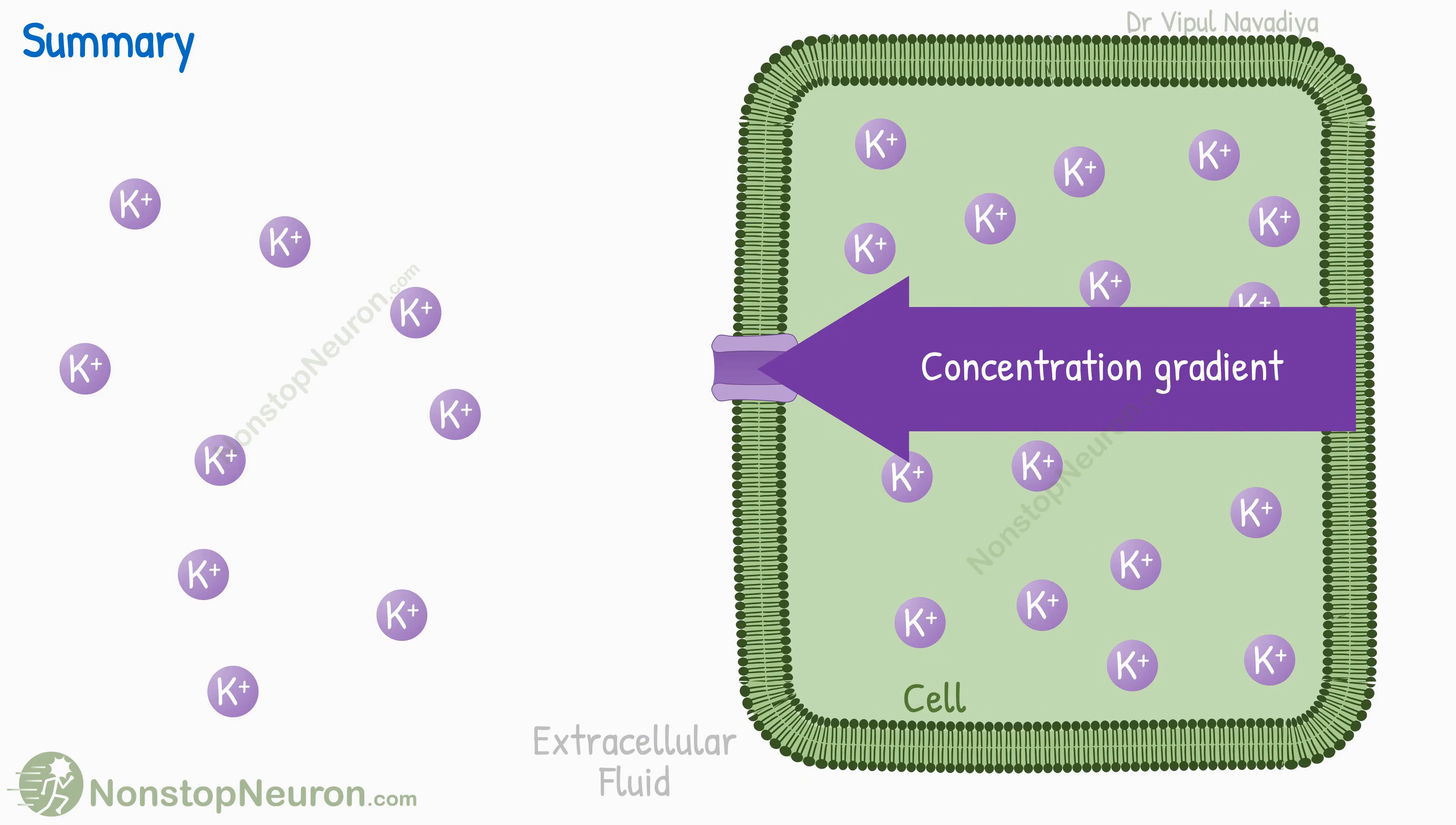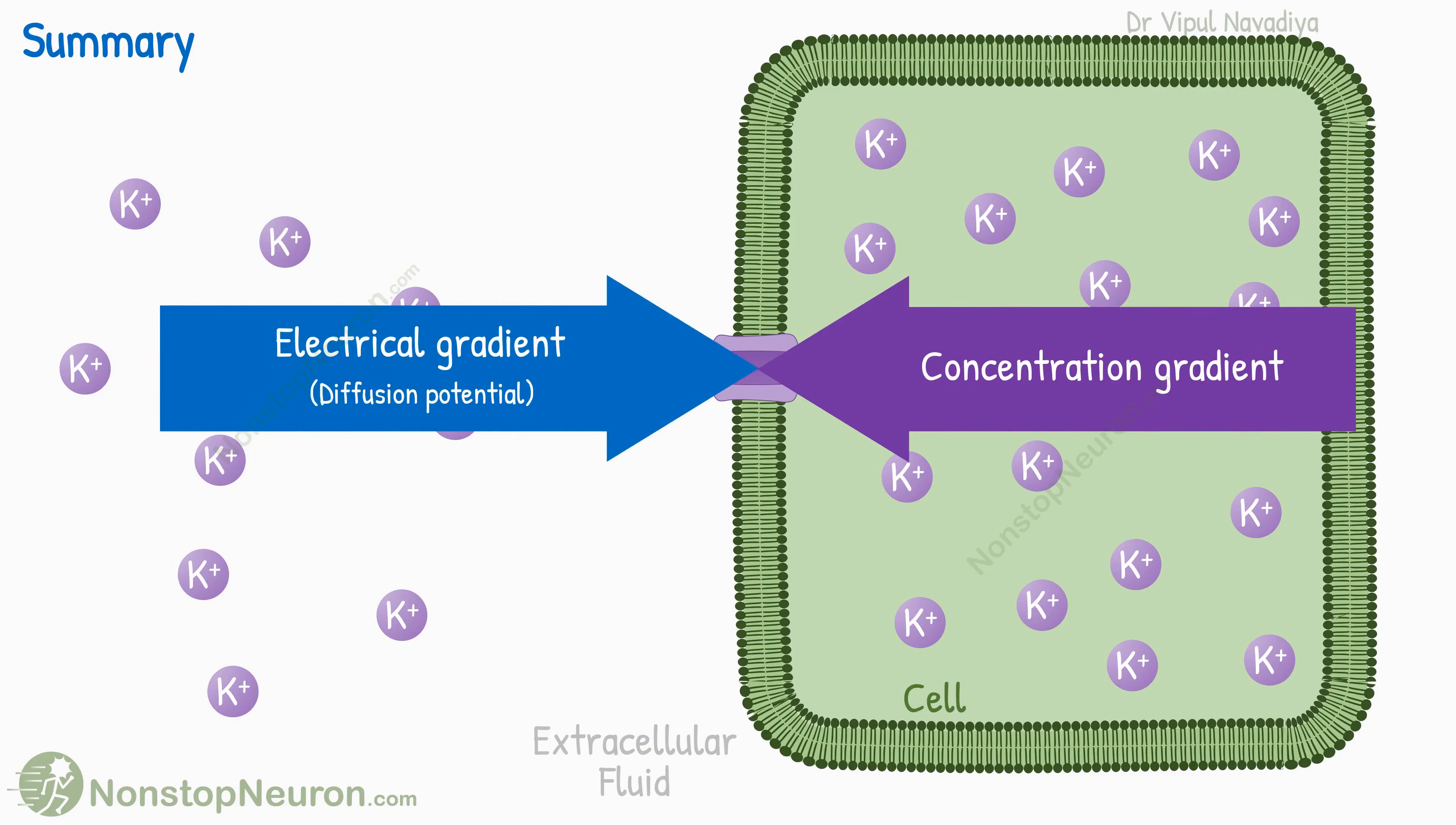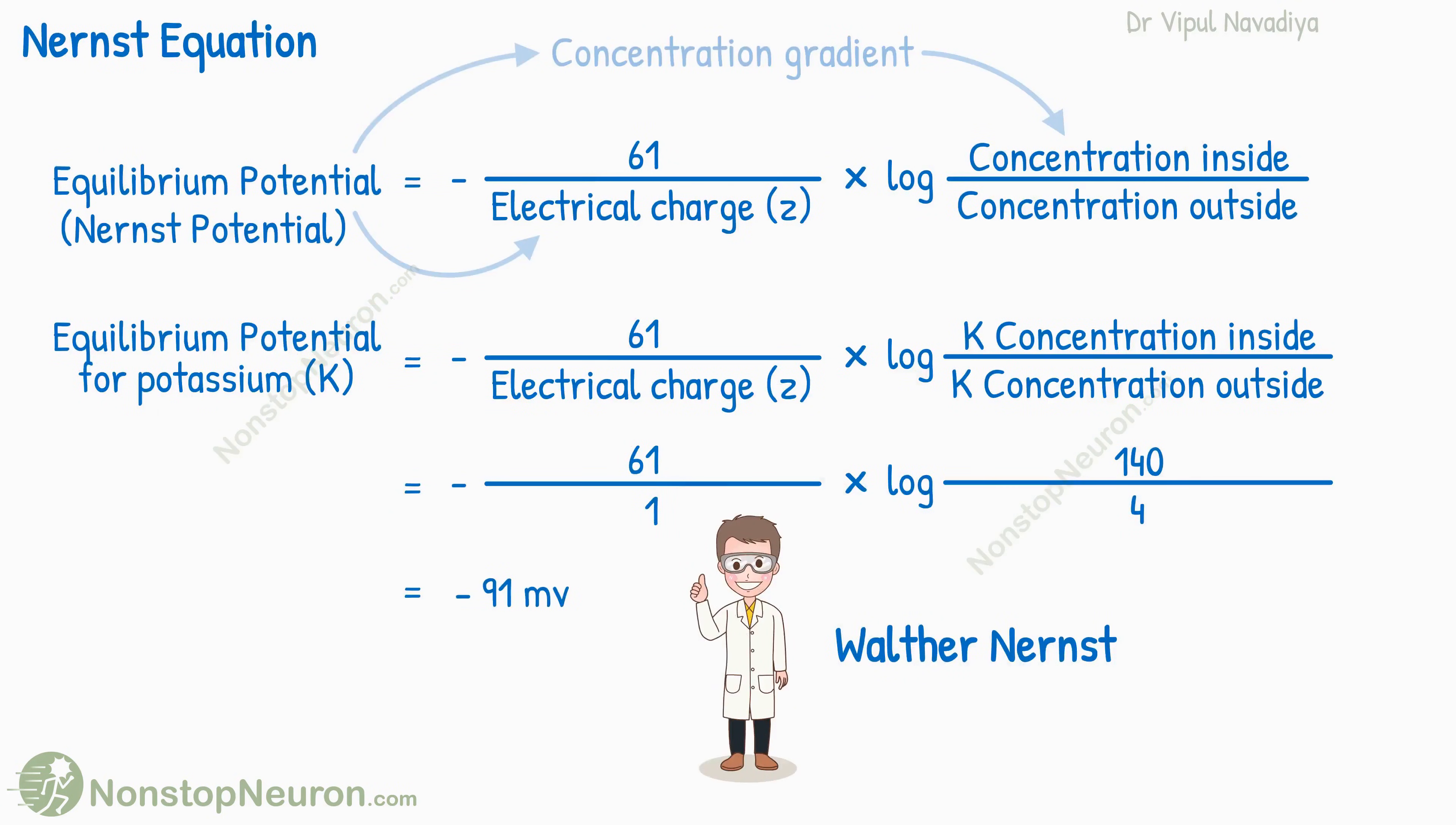If charged ions diffuse across the cell membrane, the resultant electrical potential opposes further diffusion of those ions. The exact potential where diffusion stops depends on the concentration gradient and charge on the ion. And it can be calculated by the Nernst equation.